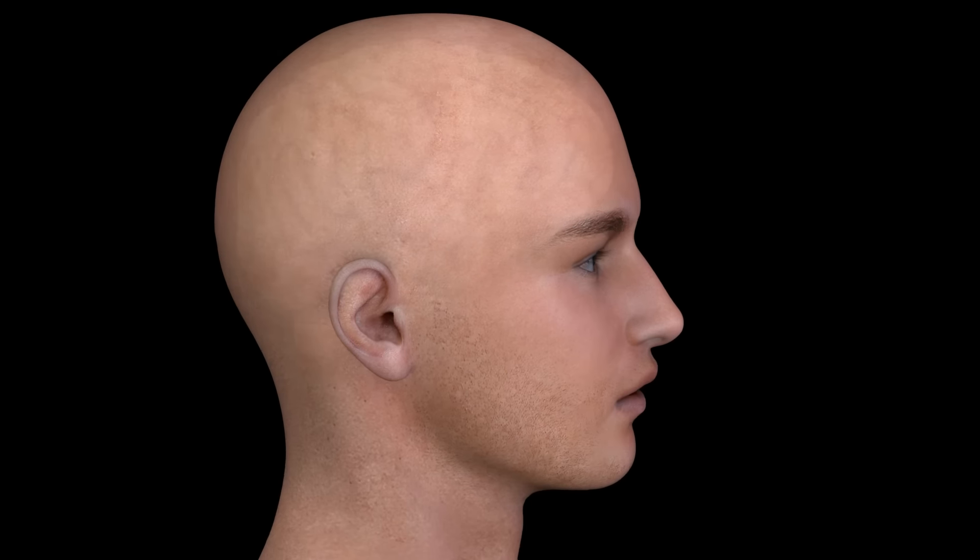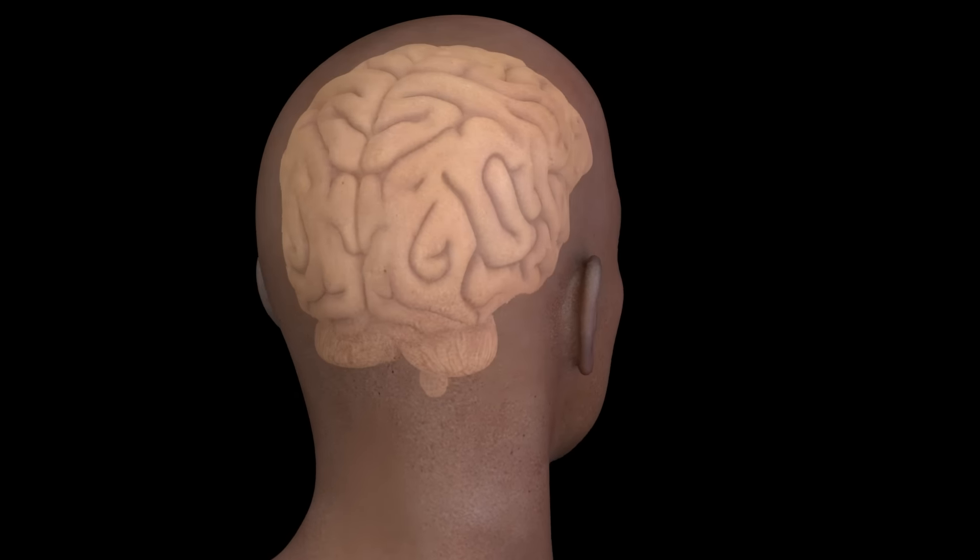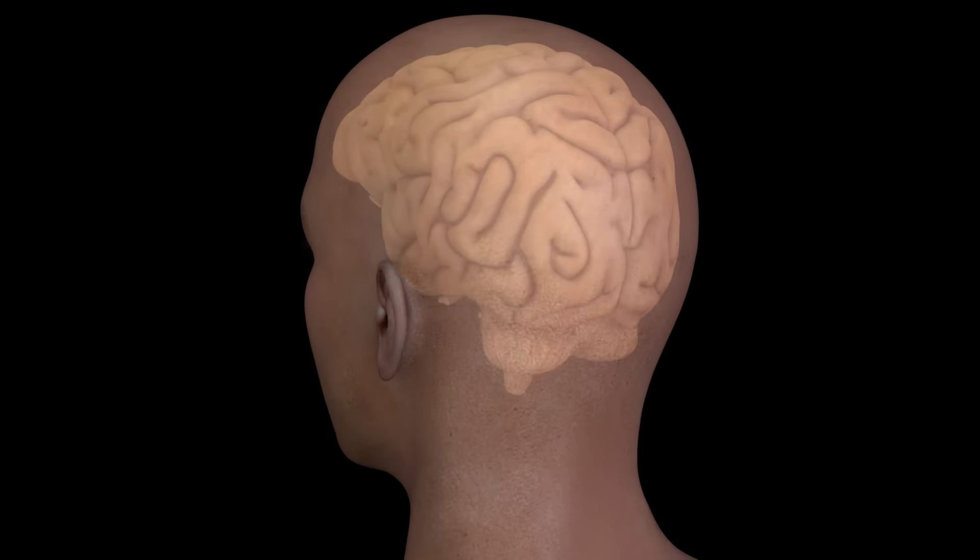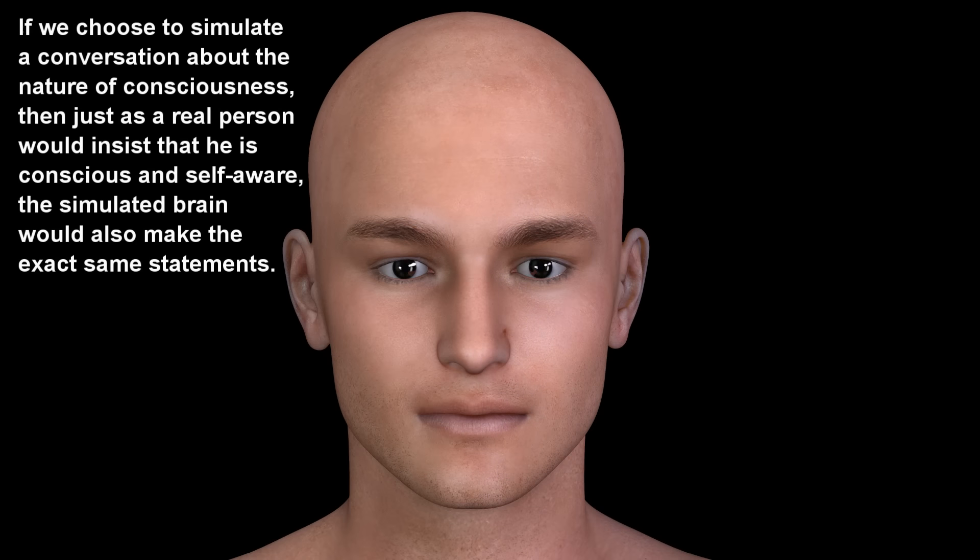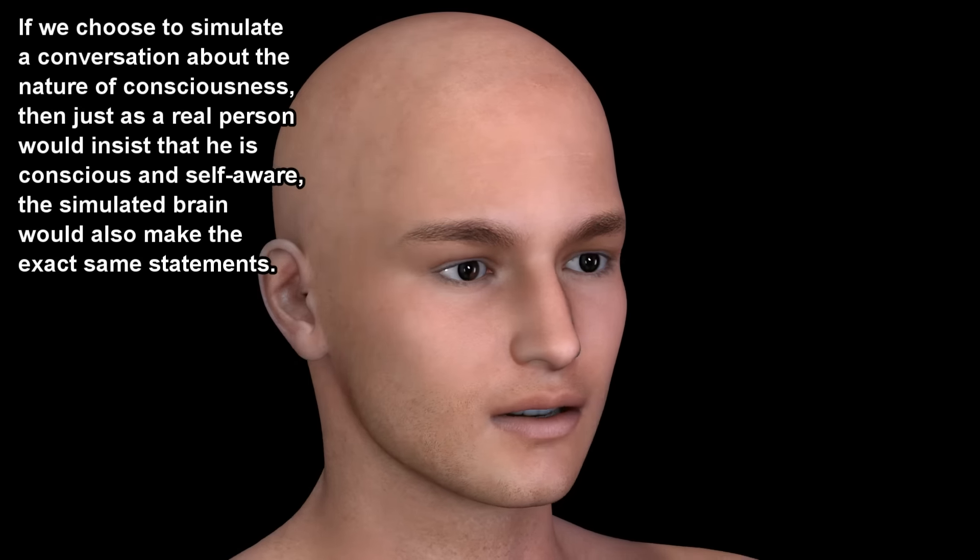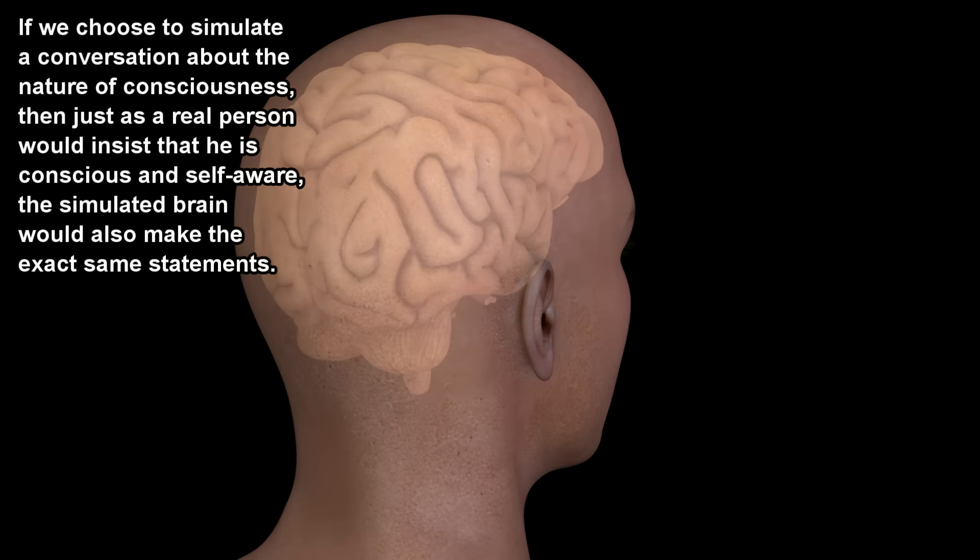If this is truly an accurate simulation, then we should be able to simulate a conversation with the person and to know the probabilities of all their responses. If we choose to simulate a conversation about the nature of consciousness, then just as a real person would insist that they are conscious and self-aware, the simulated brain would also make the exact same statements.